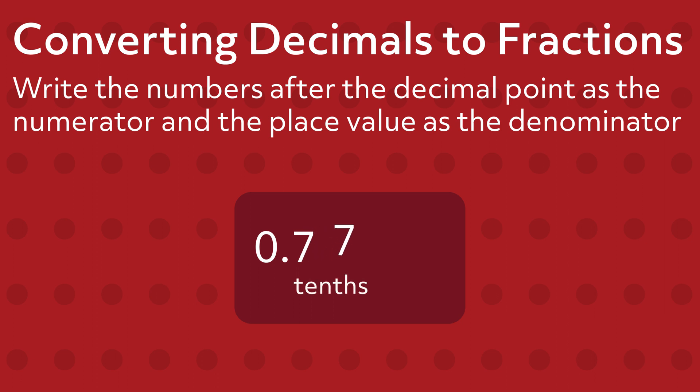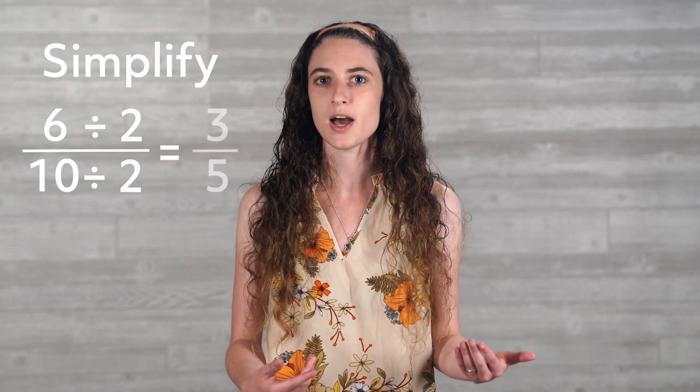First, write the number after the decimal point as the numerator of the fraction: 7. Next, look at the place value of the last digit in the decimal. Since 7 is the only decimal digit and it is in the tenths place, write 10 as the denominator of the fraction — 7 over 10. In the number 0.6, the 6 is in the tenths place. The numerator is 6 and the denominator is 10, so the fraction is 6 tenths. We can simplify 6 over 10 by dividing the numerator and denominator by 2 to get 3 over 5. The original fraction 6 over 10 is referred to as the decimal fraction, and the simplified fraction 3 over 5 is called the common fraction.